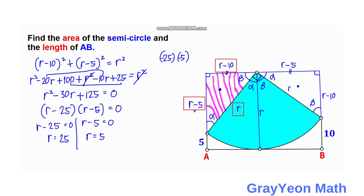To decide which solution is valid, we check R = 5: the leg R − 10 becomes 5 − 10 = −5, which is a negative distance, and R − 5 = 0, which is also invalid. Since a negative or zero distance is not physical, R = 5 is rejected, and we accept R = 25, which gives positive values for both legs.